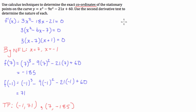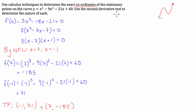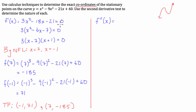We're at the halfway point of the question. It says to use the second derivative test to determine the nature of each stationary point. Since it specifically asks for the second derivative test, let's make sure we do that. The second derivative f double prime of x equals 6x minus 18.